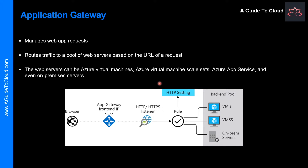Operating at OSI Layer 7 enables load balancing to take advantage of other features that Application Gateway provides. Application Gateway supports the HTTP, HTTPS, HTTP/2, and WebSocket protocols, and the Web Application Firewall to protect against web application vulnerabilities. End-to-end request encryption is part of the Azure Application Gateway, and it provides auto-scaling to dynamically adjust capacity as your web traffic and load change.